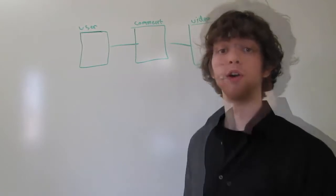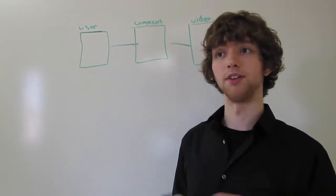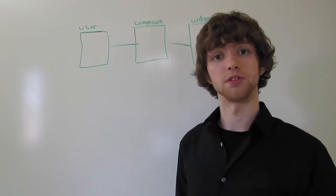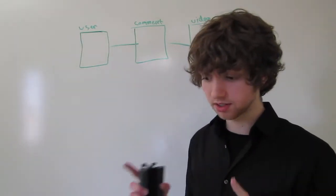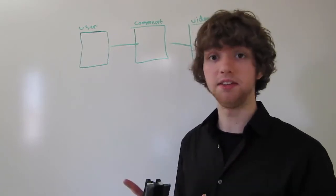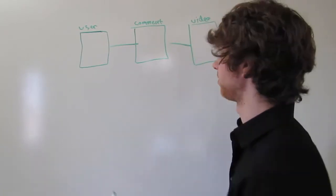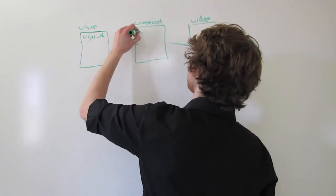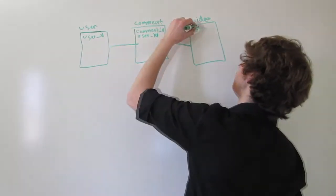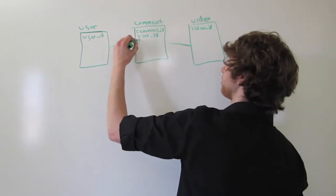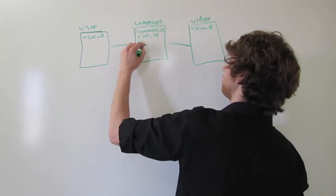What are the join conditions for this? If we want to do an inner join, let's discuss the conditions and also the results we should expect. So let's just define the keys that are going to connect these tables. We have a user ID, then a comment ID, then a user ID, then a video ID, and then this video ID will be referenced in the video table by a video ID.